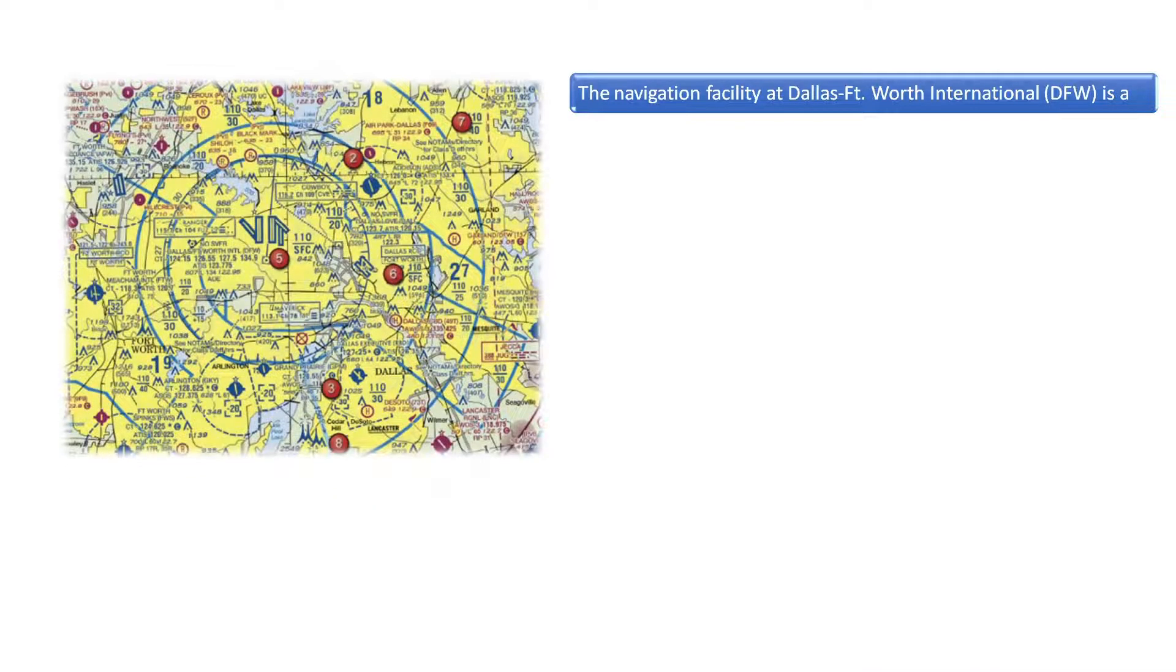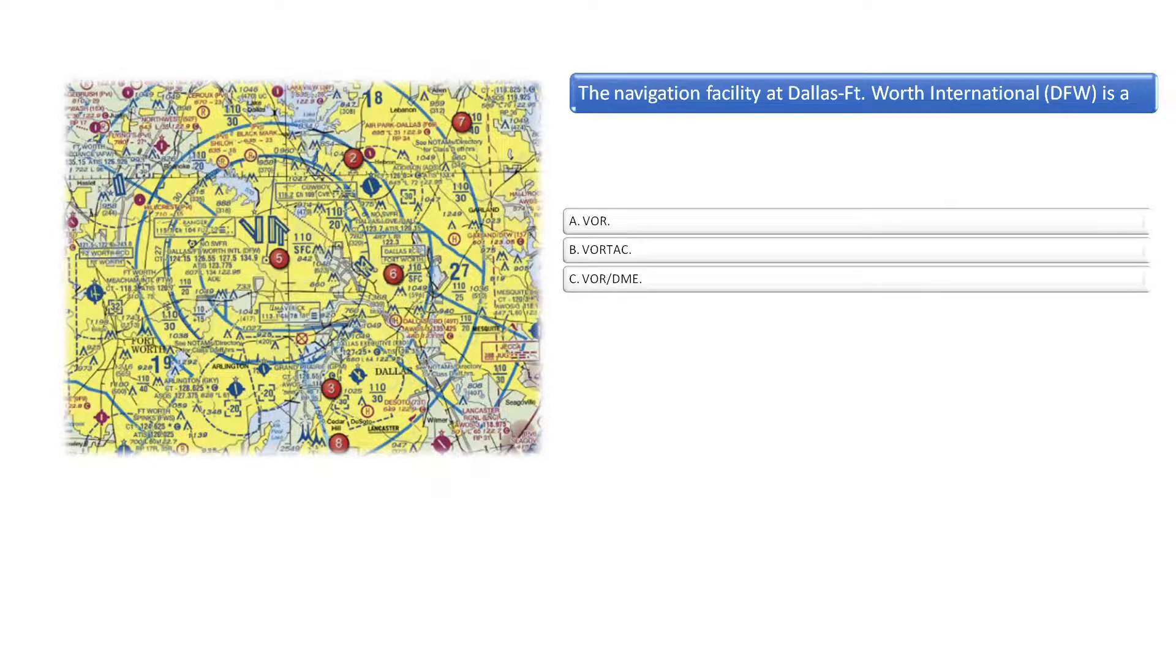The navigation facility at Dallas-Fort Worth International is a... See the hexagon symbol in the center of the chart surrounded inside a square next to the number 5. As indicated by the chart legend, in the bottom left, this symbol indicates a VOR DME. The correct answer is C.